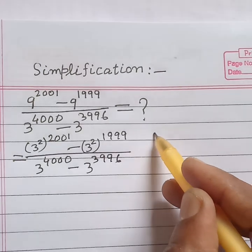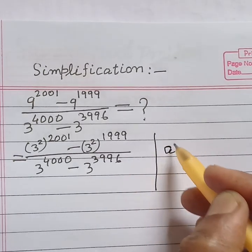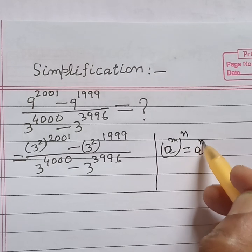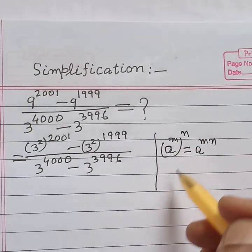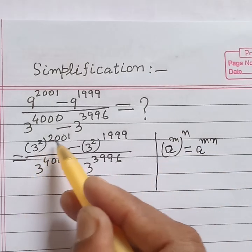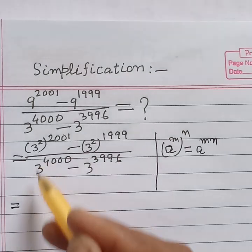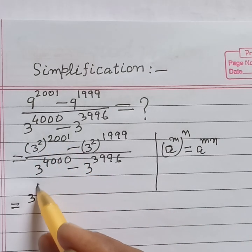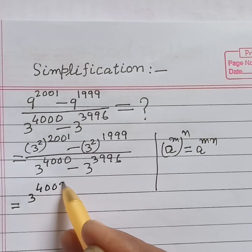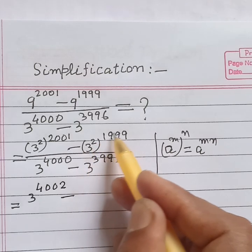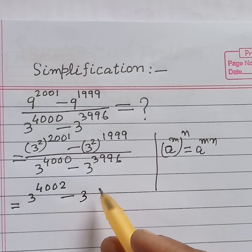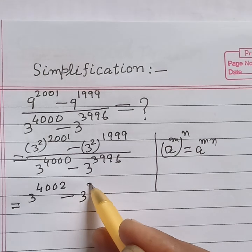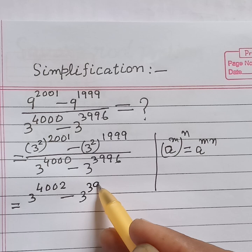Now we apply the laws of indices: a to the power m, whole to the power n, is equal to a to the power m×n. So according to this rule we can write this as: 3 to the power 2×2001, which is 4002, minus 3 to the power 2×1999, which is 3998.